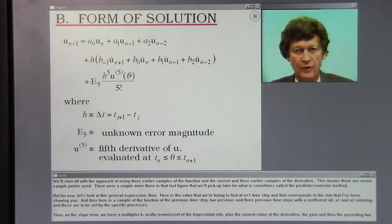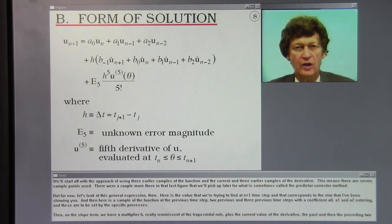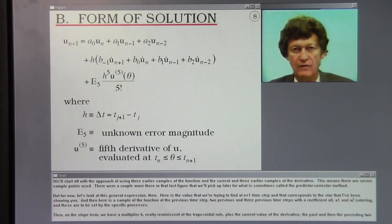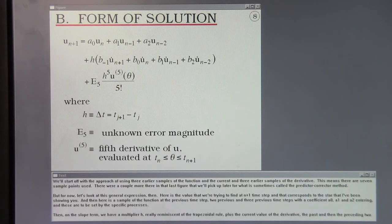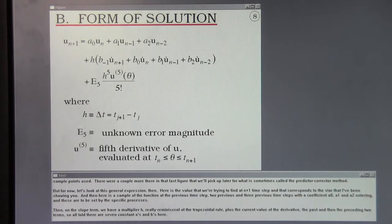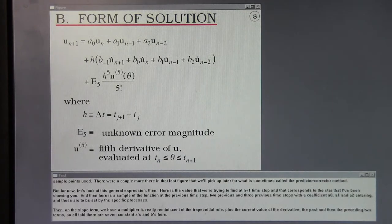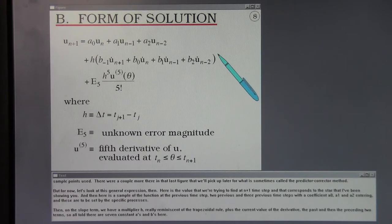We'll start off with the approach of using three earlier samples of the function and the current and three earlier samples of the derivative. This means there are seven sample points used. For now, let's look at this general expression.